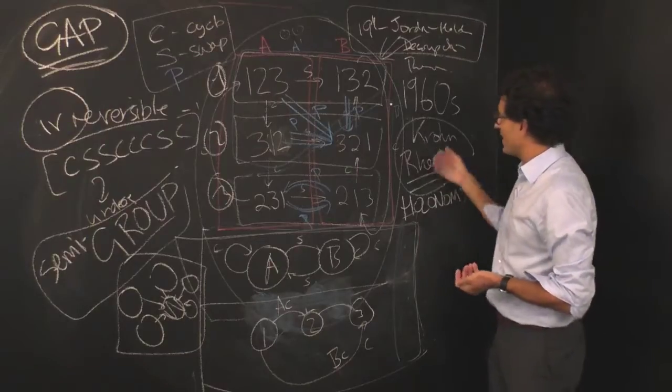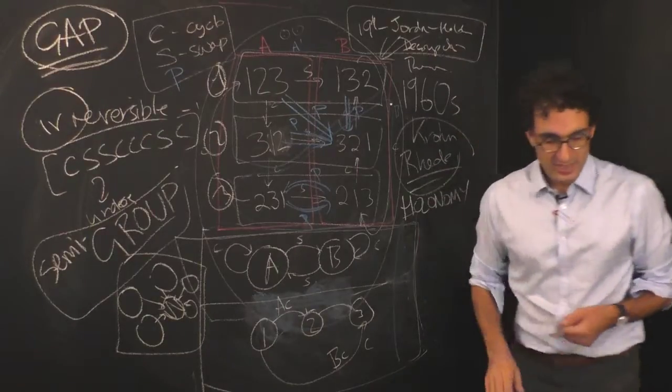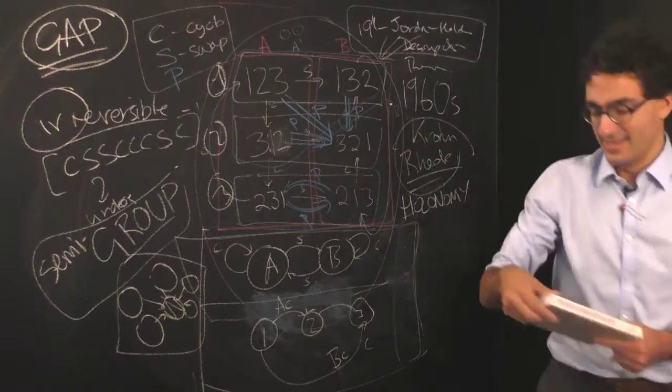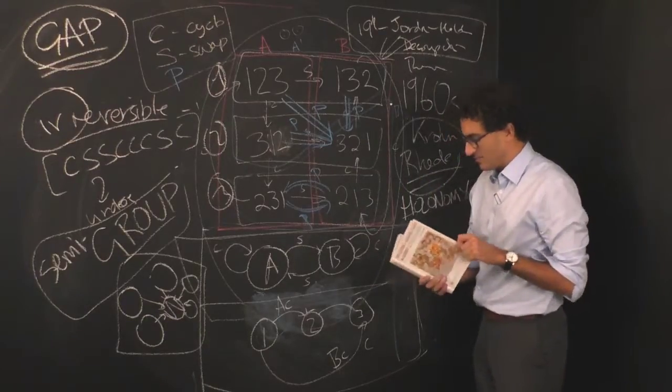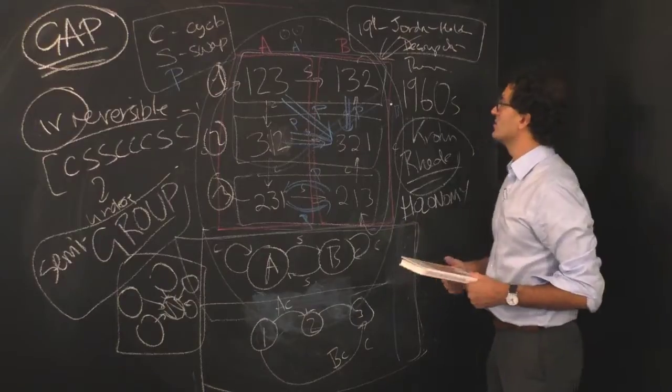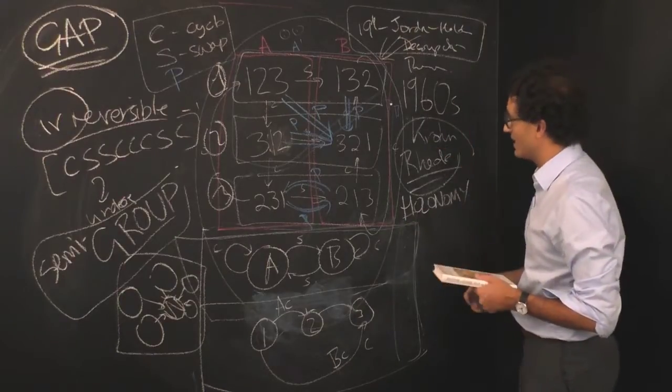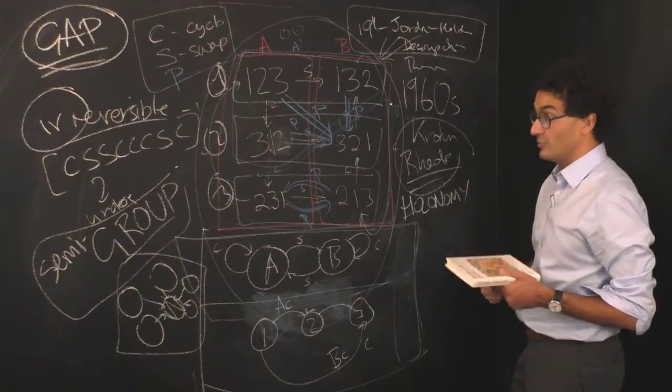It's interesting when you read Rhodes' book, so here is indeed John Rhodes' book. Krohn actually ended up leaving mathematics, but Rhodes stuck around. And over the years, Rhodes has become increasingly enchanted by this result and all the things that you can do with it.